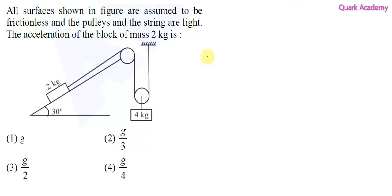In this question we need to find the acceleration of the 2 kg mass. If you look at the system, there's a 4 kg mass and two pulleys with a string connected. Based on the masses, we can consider that the 4 kg mass is going to move downward with some acceleration here.